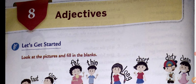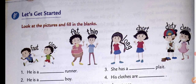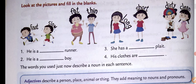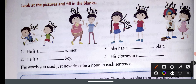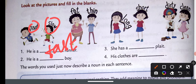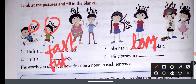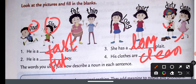What is an adjective? Adjectives describe how things are. Look at the picture and fill in the blanks. For example: he is a fast runner or slow runner — you can fill according to what you see. He is fat. He has a tall plant, he has a long plant. His clothes are dirty or clean.